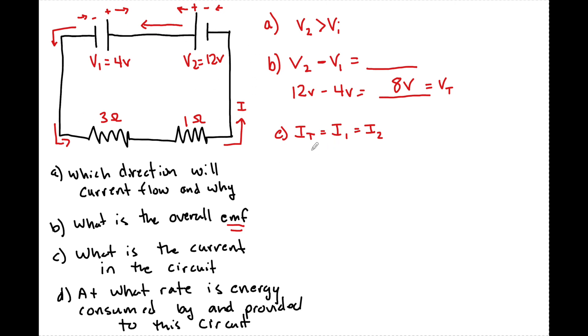So if I want to find I, I'm most likely going to use Ohm's law, which is V equals IR. So what I can do is I can look at the total circuit, and I can say that I is going to be equal to V total divided by REQ, the total resistance of this circuit.